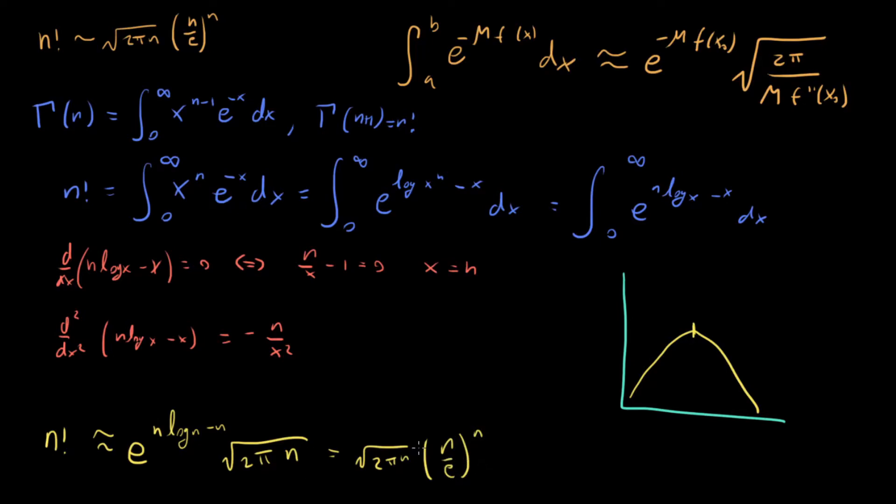We've proven Sterling's formula and the way we did it was just by approximating our gamma function integral to be a Gaussian integral. And just that one assumption, just that one approximation was able to give us this interesting behavior of the gamma function for large n.